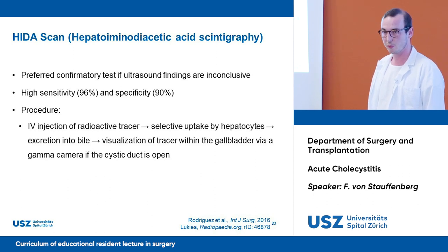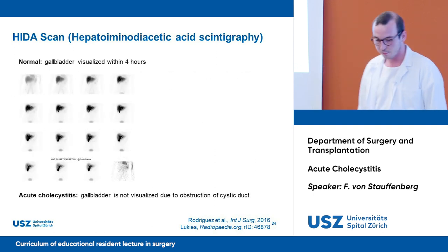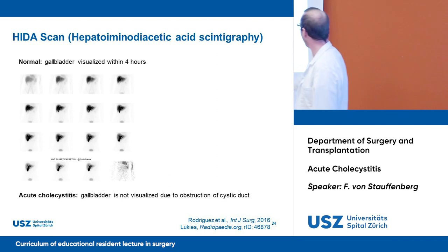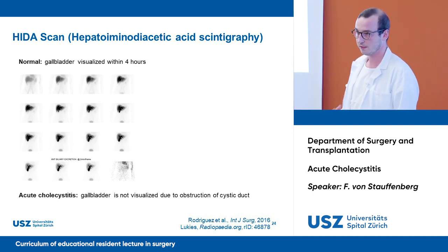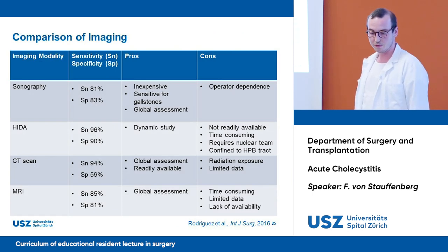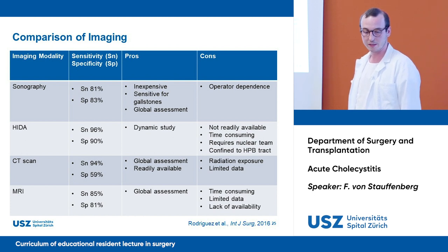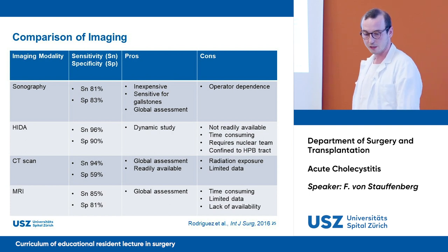We intravenously inject a radioactive tracer, which is selectively taken up by hepatocytes, then excreted into bile, and can be visualized in the gallbladder via gamma camera. In a normal finding, the gallbladder is visualized within four hours as it fills up with the tracer. In acute cholecystitis, where there is obstruction of the cystic duct, the gallbladder cannot be visualized because the tracer cannot enter it. It is advised to start with sonography and add different imaging modalities depending on sonography findings.